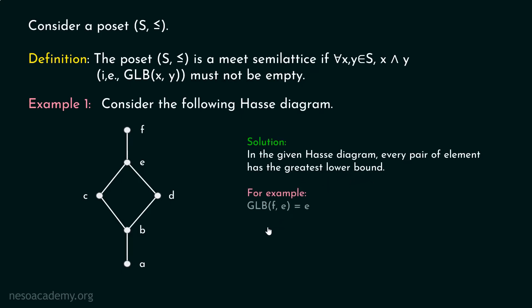For example, let's consider the pair f and e. Greatest lower bound of f and e is e. It is always easy to identify the greatest lower bound of any pair, as we learned in our previous lesson. If you want to identify the greatest lower bound of f and e, you just have to consider the pairs and trace the path downwards from f and from e. You can see that the first meeting point is e — this is the first point where f and e meet. So this is our greatest lower bound.